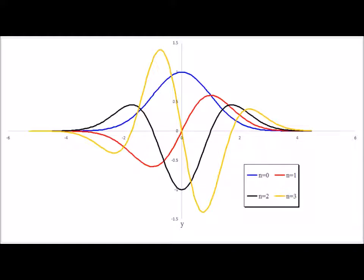Here we see displayed on one graph the wave functions corresponding to the four lowest energy states of the quantum harmonic oscillator, n equals zero through n equals three. We notice that the curvature of the wave functions increases as n increases, which is to be expected since the curvature is linked to the kinetic energy of the particles. The higher the state of vibration, the more quickly the particles will be moving.